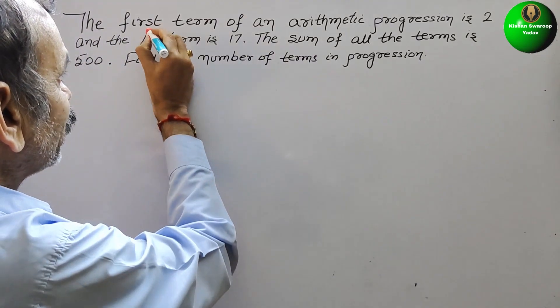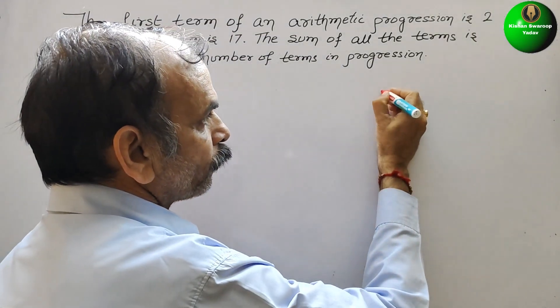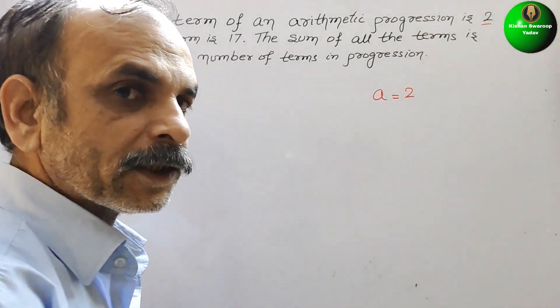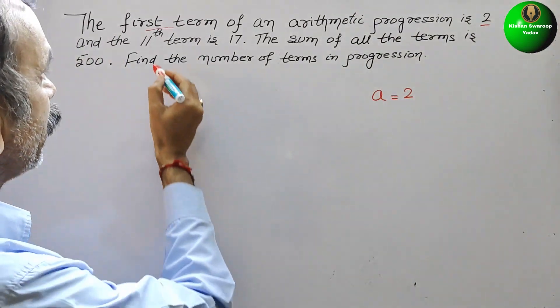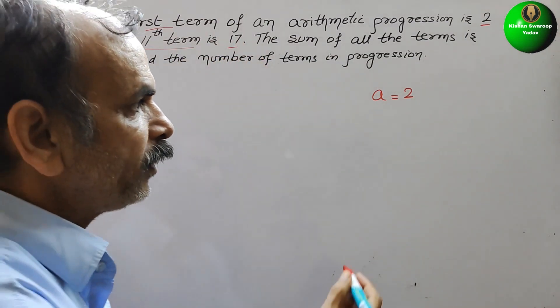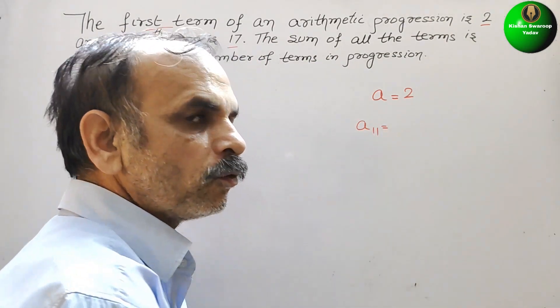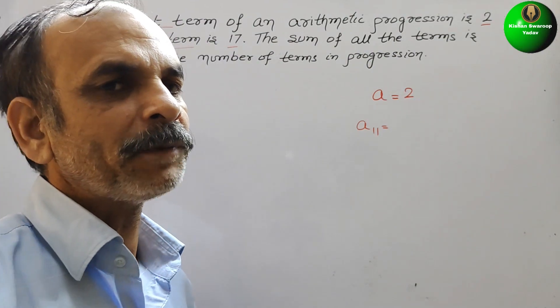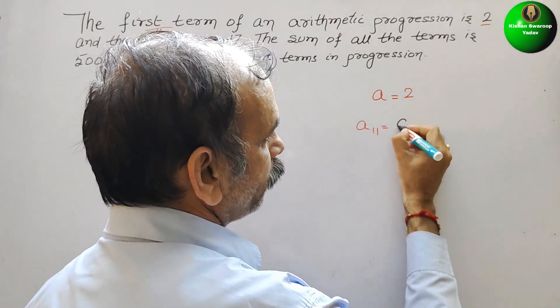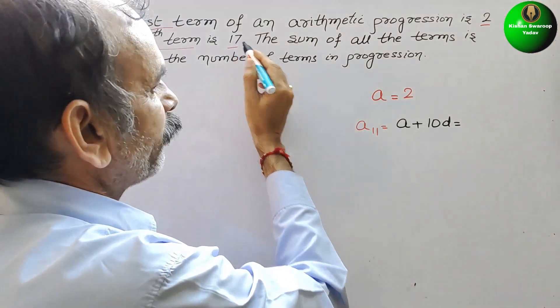See, what they have given. Here they have given the first term, that is your a, is equal to 2. Next, what they have given: 11th term is 17. So we can write a₁₁, so how do we write a₁₁? That is nothing but a plus 10d, a plus 10d, that they have given you 17.